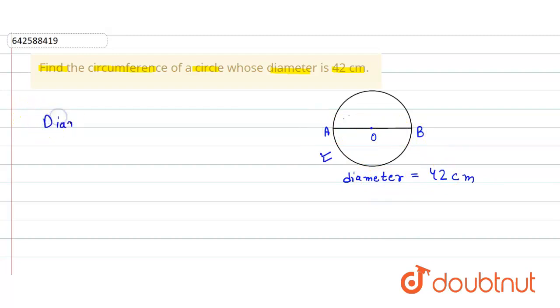Here it is given that the diameter of the circle is 42 centimeters. So the radius of the circle will be half of the diameter. It will be 42 divided by 2, so we get 21 centimeters.